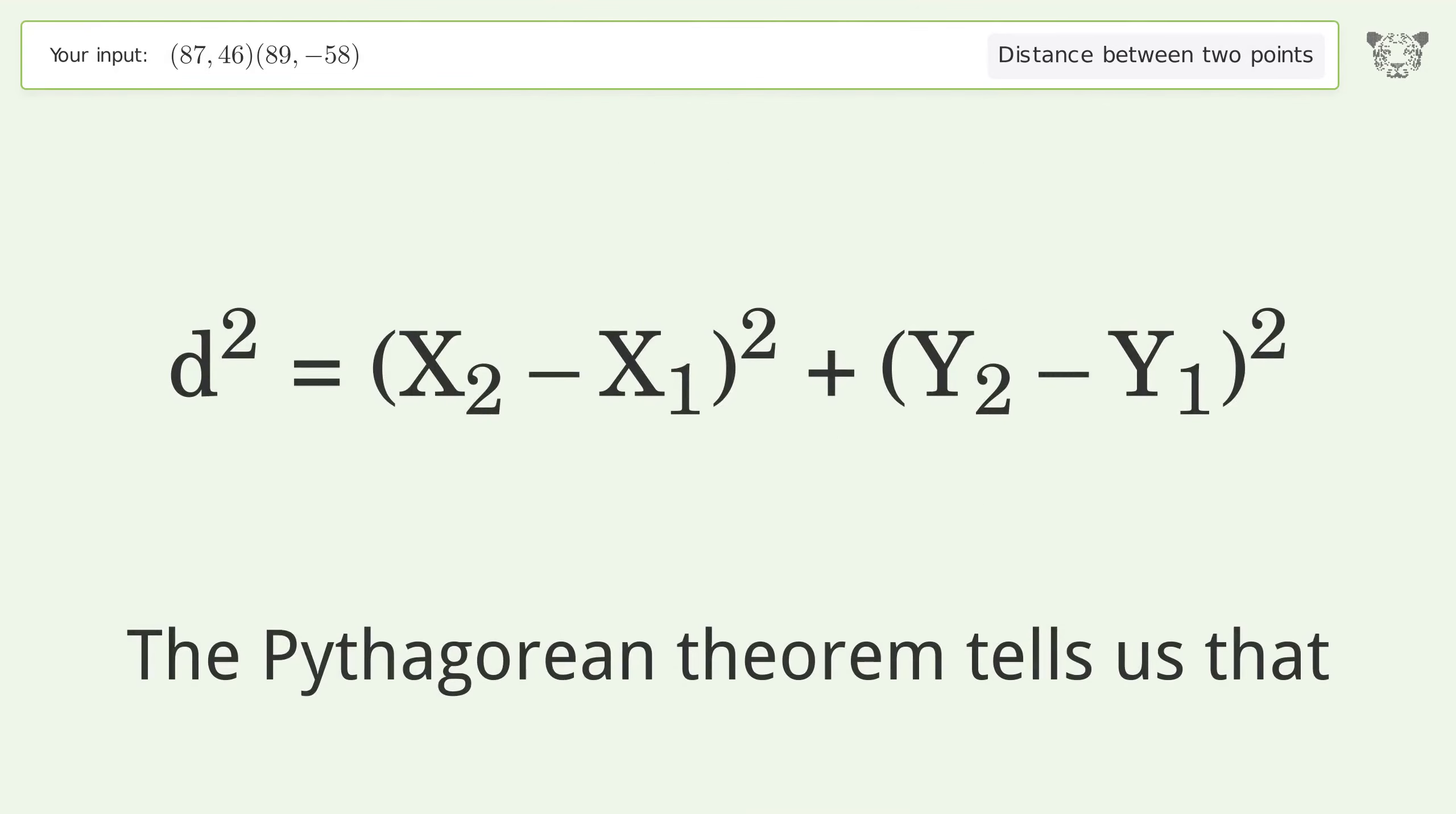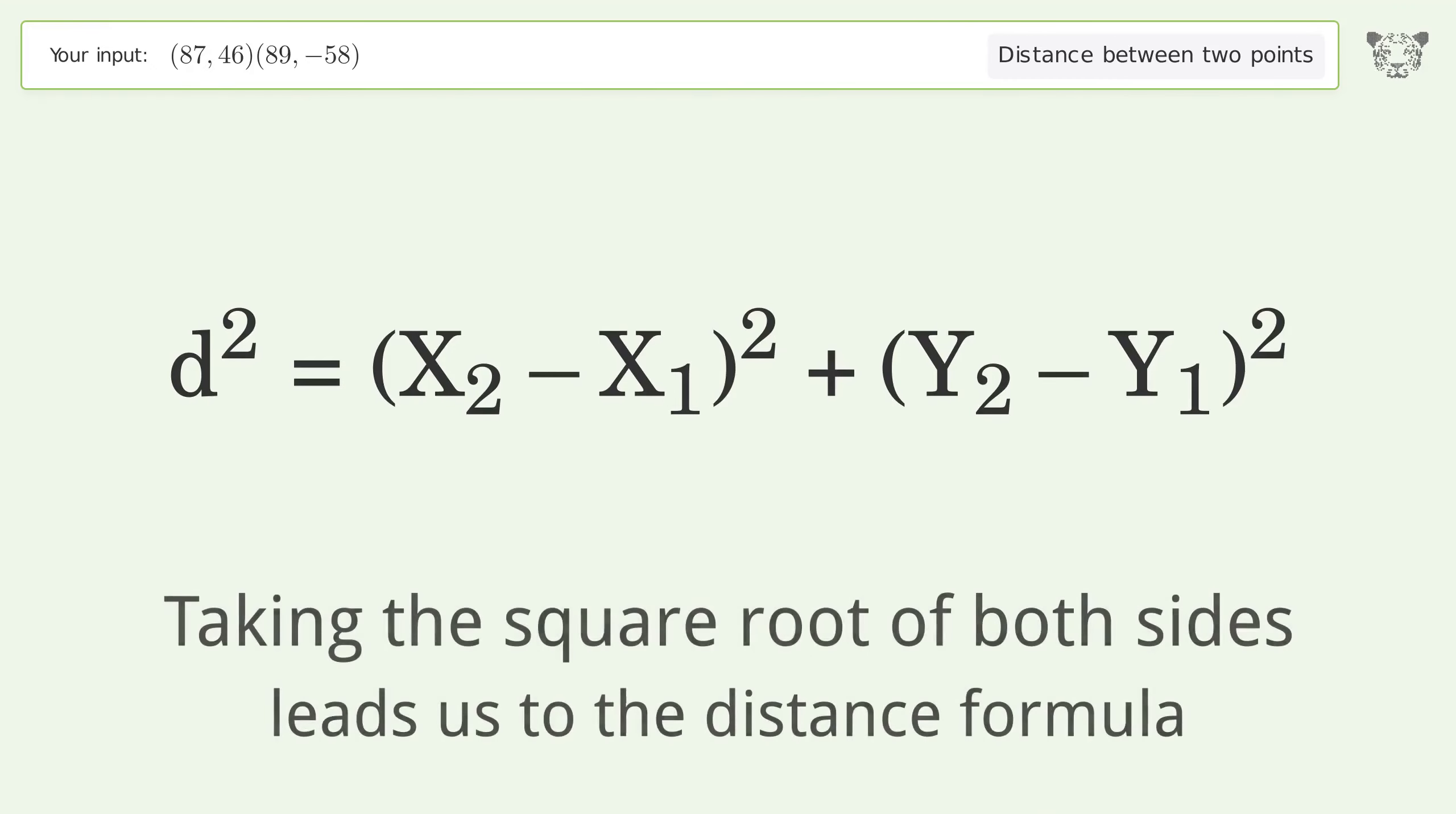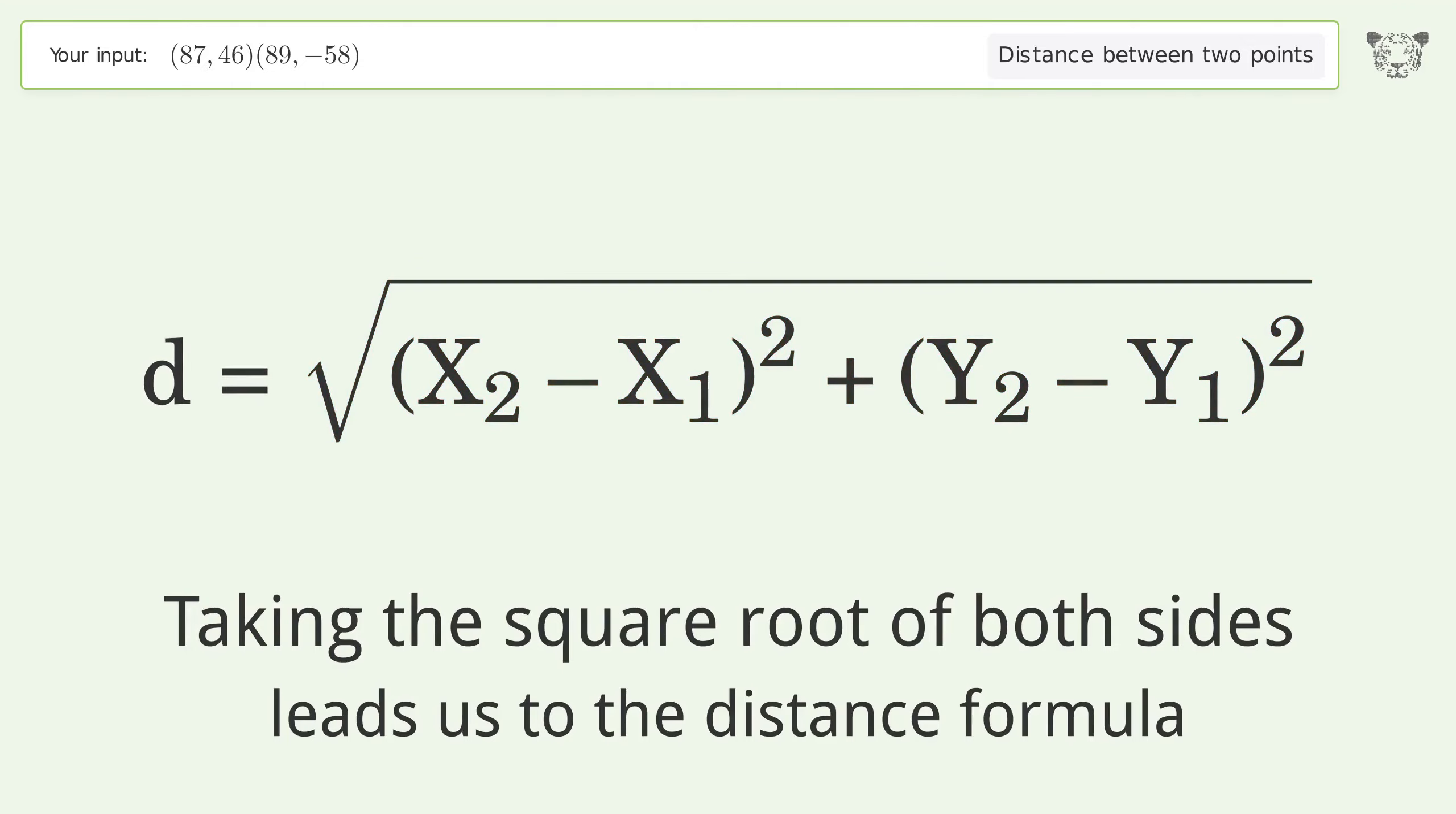The Pythagorean theorem tells us that taking the square root of both sides leads us to the distance formula. Plug the coordinates of the points into the formula.